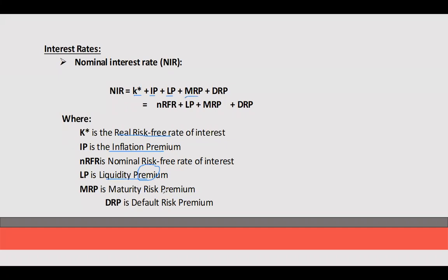Maturity risk premium is the additional payment due to the issuing of long-term security. Since you are locked in that security for a longer period and cannot use your money, you require a higher interest. And default risk premium is the additional payment due to non-payment or default in interest and principal.